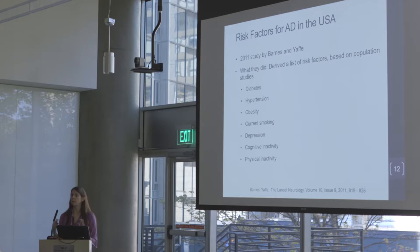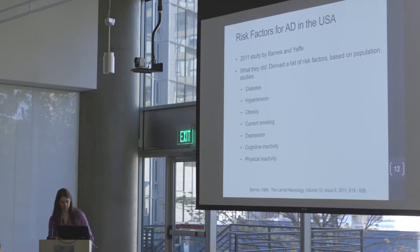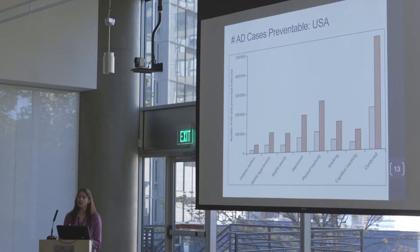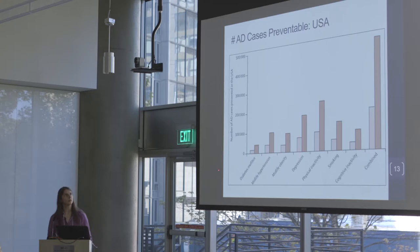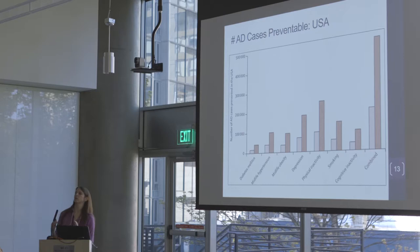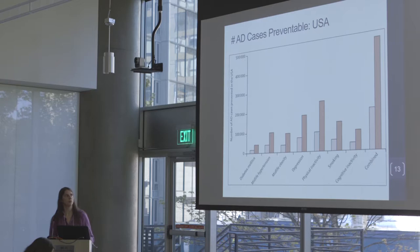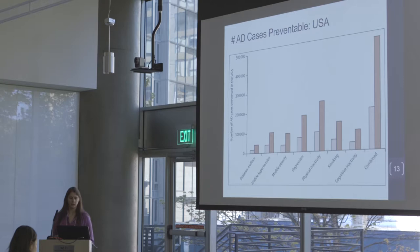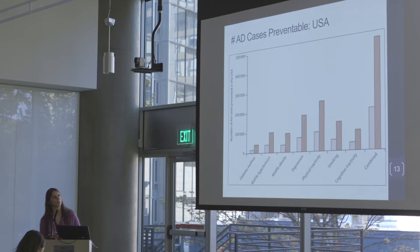What they found is that a lot of Alzheimer's cases could be preventable in the United States. If we reduce diabetes by 10%, this is how many Alzheimer's cases we'd prevent — and so on down the line. If we reduced all of these risk factors by 25%, we could prevent 500,000 cases of Alzheimer's. These are big numbers — states will save money on Medicaid, and this is a big deal.